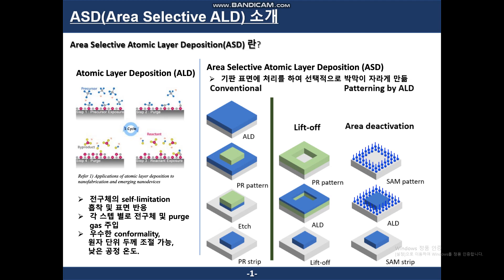To reduce this complexity, a simpler patterning method is needed. Also, after display deposition, there are several additional processes such as cutting display panels. In this process, there can be cracks on the display panel and these cracks can propagate across the whole display panel. To solve this problem, thin film encapsulation patterning is also needed.